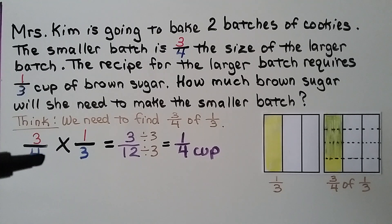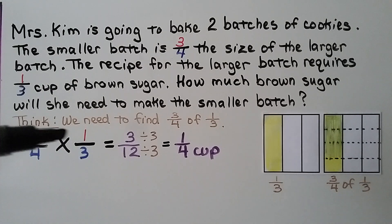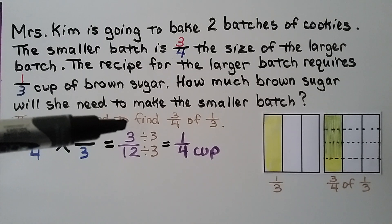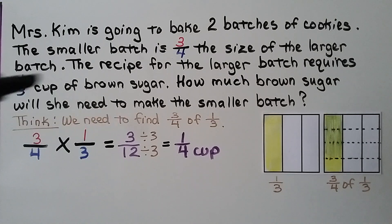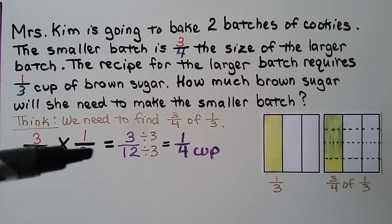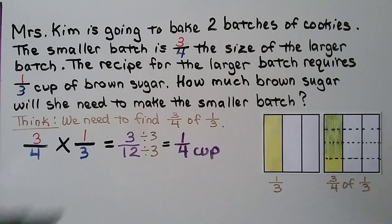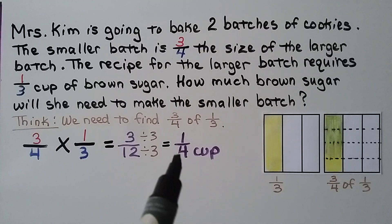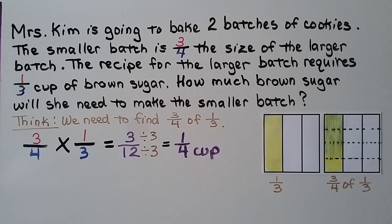And four times three is twelve. Going straight across the numerator gives the numerator of the product; going straight across the denominator gives the denominator. We have three-twelfths, but we write it in simplest form as one-fourth.